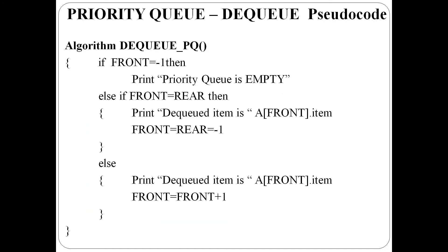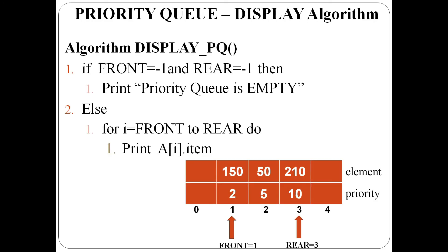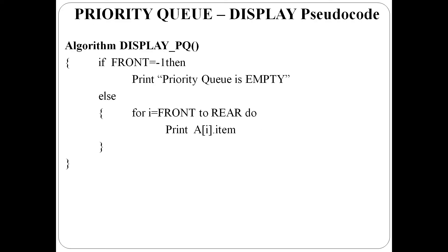This is the corresponding pseudocode. Next is priority queue display algorithm. If front and rear equal to minus one, the priority queue is empty. Otherwise, iterate from front to rear and display each item one by one. This is the corresponding pseudocode.